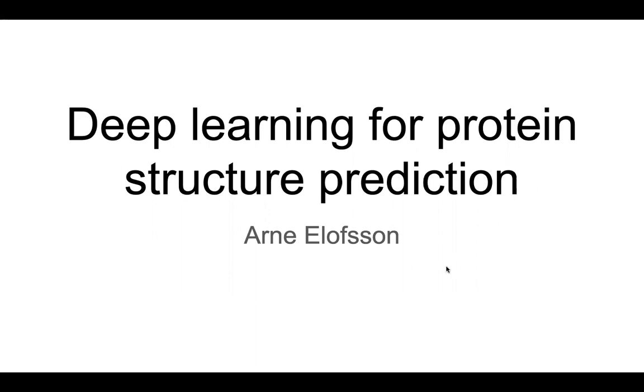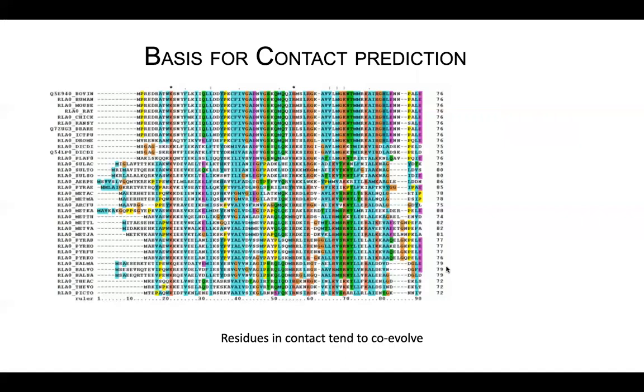To take one step back, we can start with what is the background. The background is, of course, that today for most proteins, we have a large set of homologues that can be arranged in a multi-sequence alignment.